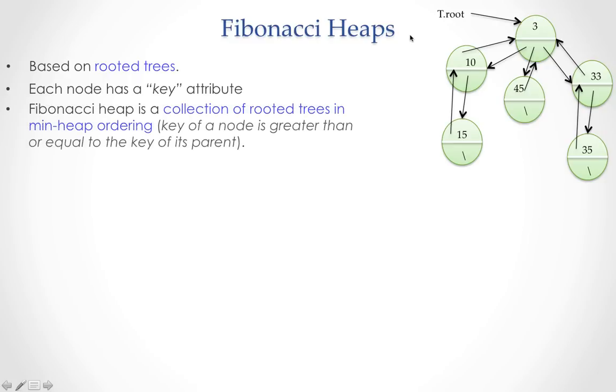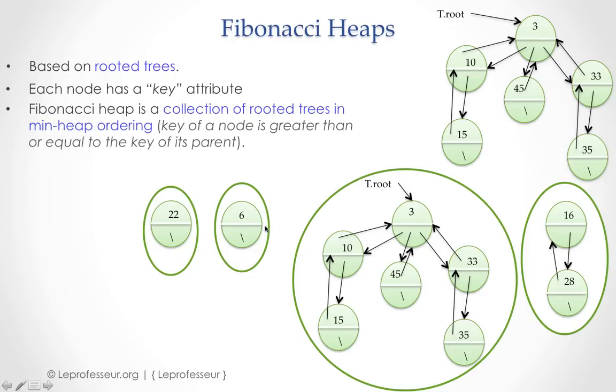Fibonacci heap is nothing but a collection of these trees. Let's say you have ten, twenty, or a hundred million such small rooted trees and you want to make a collection. That collection data structure is known as Fibonacci heap structure, with the property that each tree in that heap will have min heap order or will obey the min heap property.